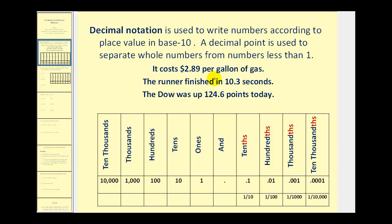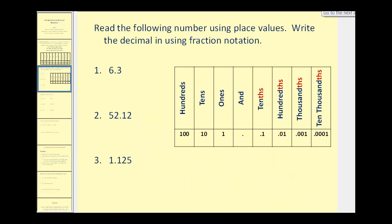If the runner finished the race in 10.3 seconds, that means it took the runner 10 whole seconds and 3 tenths of a second to finish. Since the digits to the right of the decimal represent a number less than one, we can also represent decimals as fractions. Let's go ahead and take a look at that.